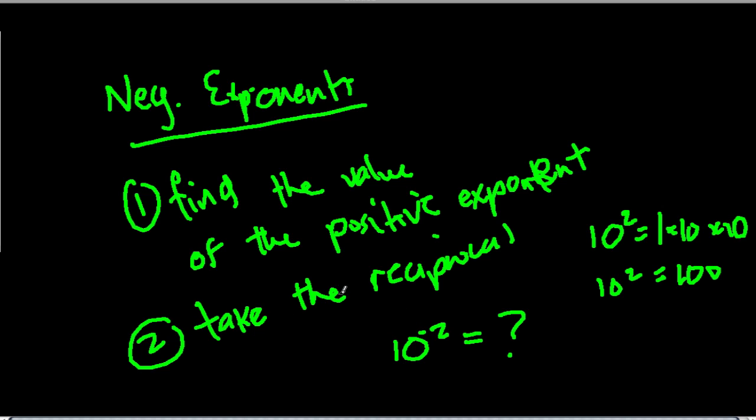So what do I do in the second step? Take the reciprocal, which means that the answer for 10 to the negative second, it's not 100. It's 1 over 100. So that's our answer. And notice it's not even negative. As I said before, negative exponents mean division, not negative numbers.